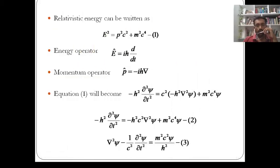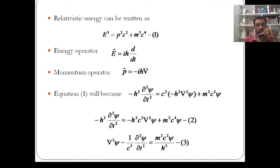We can now go to the Klein-Gordon equation. You know an equation to find relativistic energy: we can write relativistic energy as the square root of p²c² + m²c⁴, where mc² is the rest mass energy and p is the momentum. Squaring that equation, we get E² = p²c² + m²c⁴. This is equation 1, and I am writing this equation in operator form.